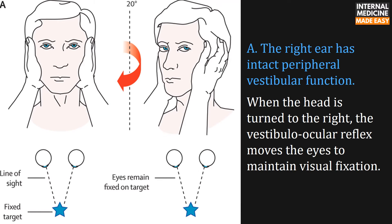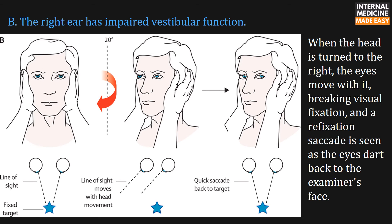If the right ear has intact peripheral vestibular function, when the head is turned to the right, the vestibulo-ocular reflex moves the eyes to maintain visual fixation. If the right ear has impaired vestibular function, when the head is turned to the right, the eyes move with it, breaking visual fixation, and a refixation saccade is seen as the eyes dart back to the examiner's face.